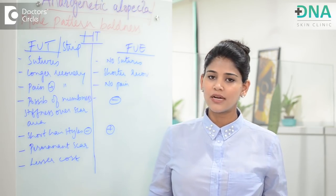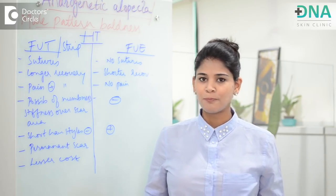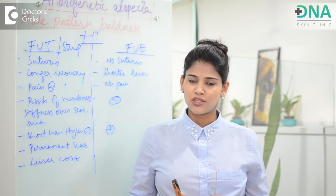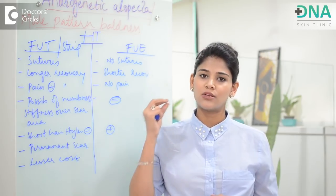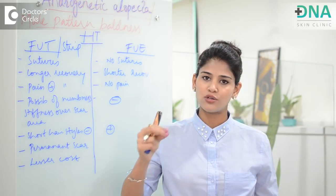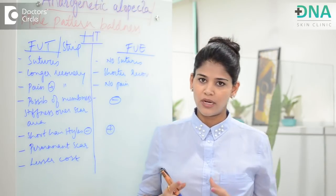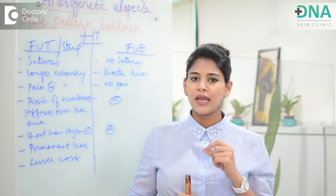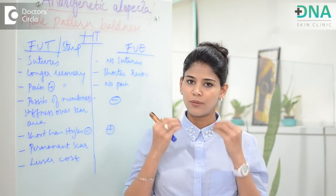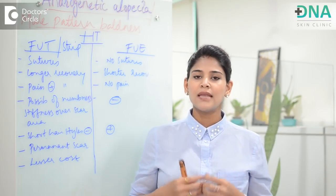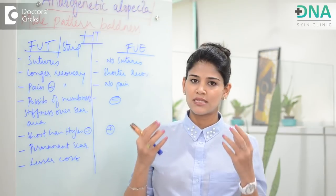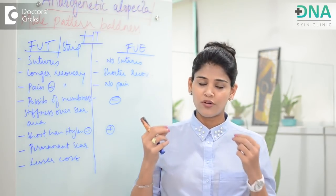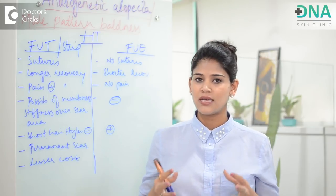Let's discuss the surgical treatment of androgenetic alopecia. It is called hair transplantation, which is a surgical procedure where hair follicles are taken from the donor area and implanted onto the recipient area. The back of the scalp is the most common donor area, with other areas being beard or body hair. The recipient area can be bald patches on the scalp, the beard, or some people go in for eyebrow transplantation as well.